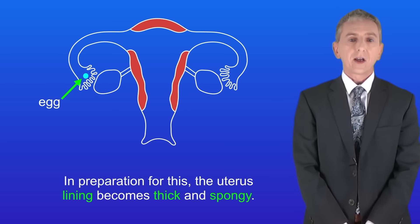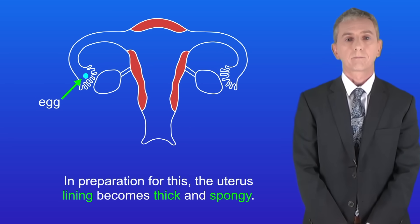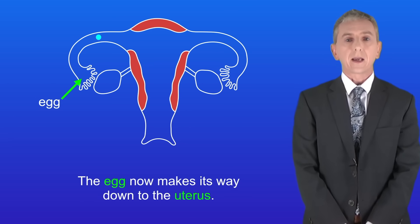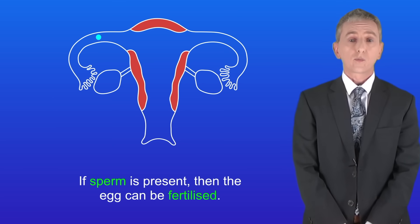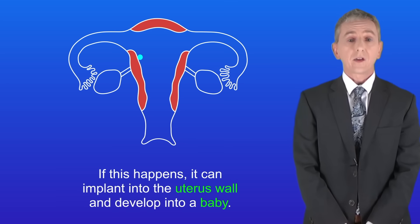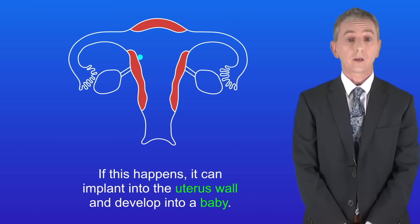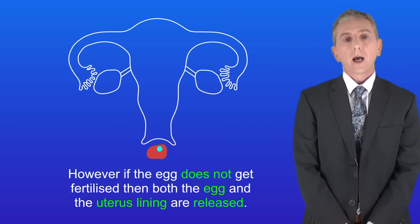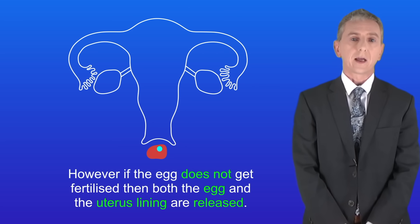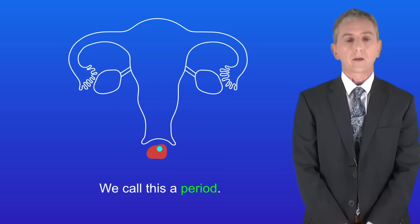In preparation for this, the uterus lining becomes thick and spongy. The egg now makes its way down to the uterus. If sperm is present then the egg can be fertilized, and if this happens it can implant into the uterus wall and develop into a baby. However if the egg does not get fertilized then both the egg and the uterus lining are released, and we call this a period.